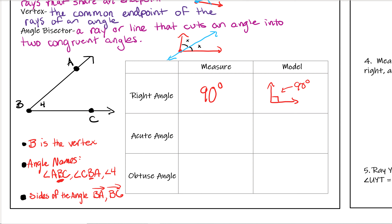An acute angle is any angle less than 90 degrees. A way to remember it: acute angles are small, and small things are cute — so this is a small, acute angle. It would be any angle that fits inside that 90-degree corner.